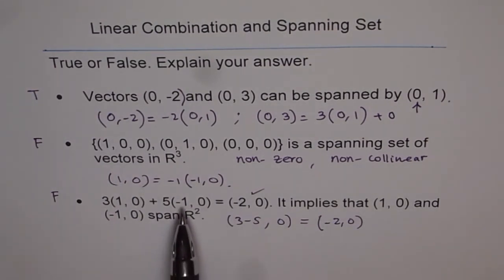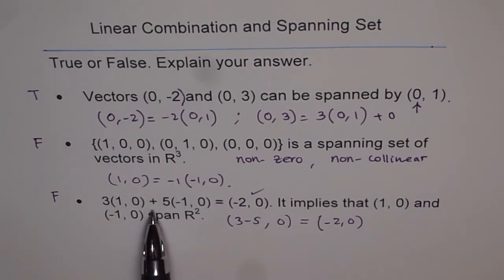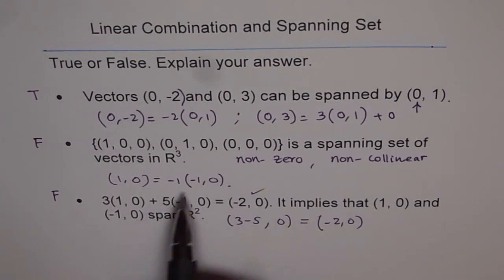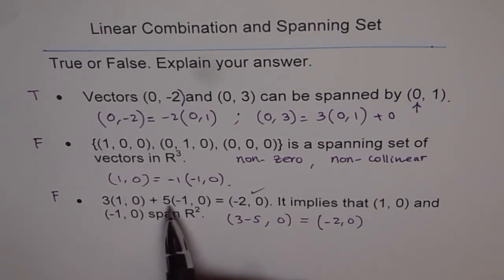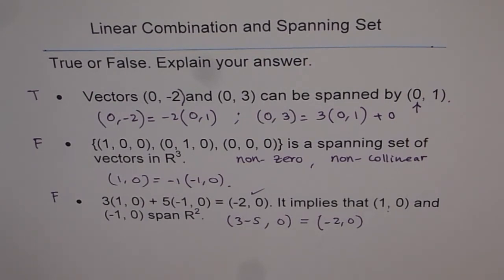However, they can span the vectors where the y component is 0, which are parallel to these. Only those vectors can be spanned, not all vectors as we saw in the first case. It is as good as just writing spanning in terms of one vector. The other one is actually a scalar multiple of (1,0). So this one is false. I hope it helps you to understand better this series, linear combination and spanning sets. Thank you.